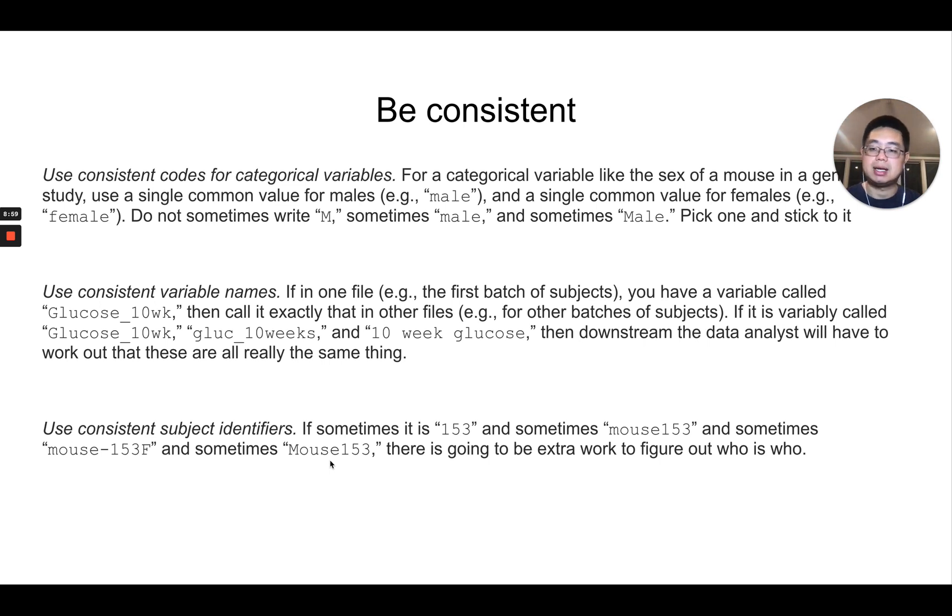Lastly, use consistent subject IDs. For example, here you have mouse 153, but sometimes maybe you may actually omit this mouse here and maybe use a hyphen. And sometimes even worse, you use an uppercase for the first letter. So make sure you use consistent subject IDs so you can match different subjects across different datasets. And this is not really uncommon in real life. Even for some of the datasets, the spreadsheets we receive from contract research organizations in the company, they don't have consistent subject IDs. So we cannot really match the same subject from different batches of data.